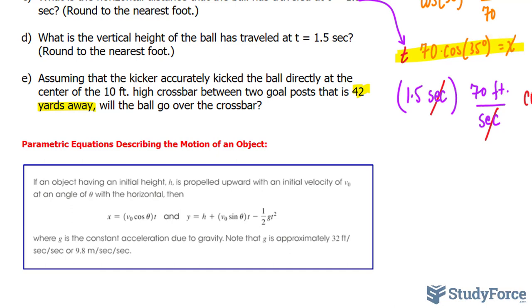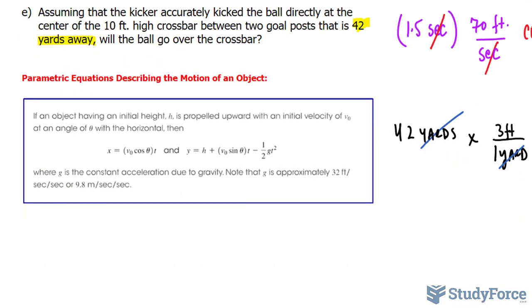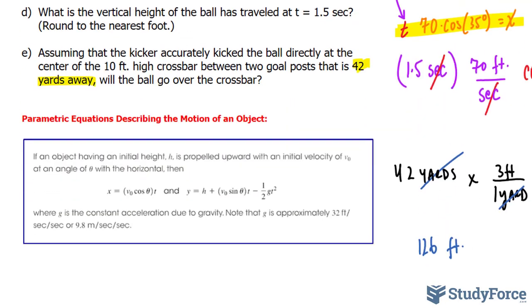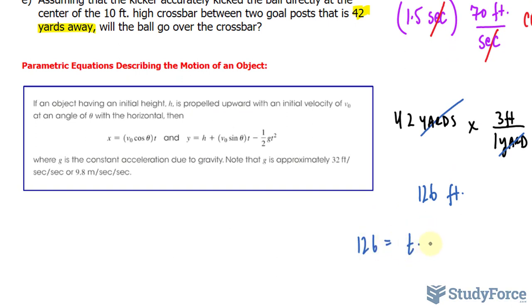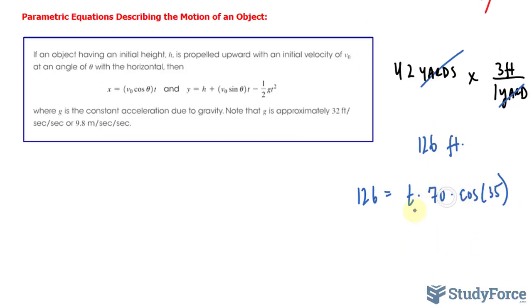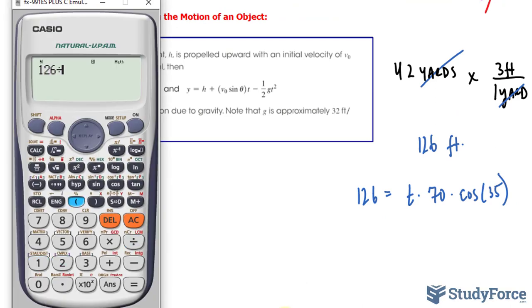Let's make 42 yards into feet. The conversion ratio is one yard equals three feet, so I'll multiply by three feet over one yard. The yards cancel out, and you're left with 42 times 3, which equals 126 feet. So I substitute 126 into x. 126 equals t times 70 times cosine 35. Dividing both sides by these factors, I have 126 divided by 70 times cosine 35, which gives us 2.197 seconds.